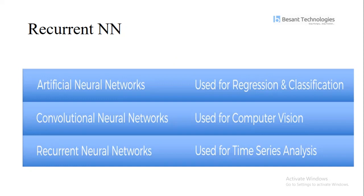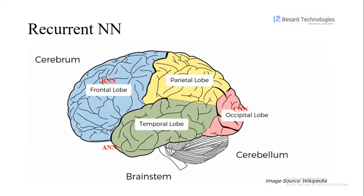Now we are going to implement our recurrent neural network. Recurrent neural networks are mainly used for time series analysis. This RNN is mainly for time series analysis — like the temporal component in the cerebrum. Now we are just going to discuss about how to implement this.